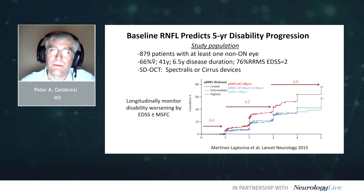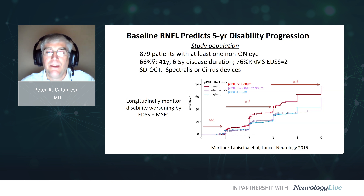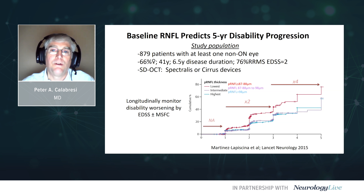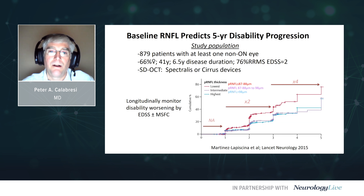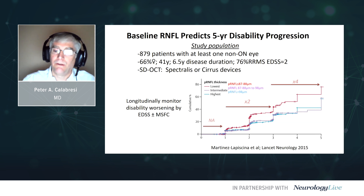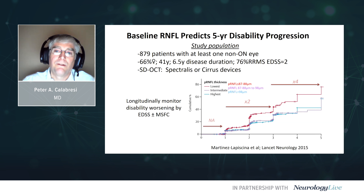We and others around the world have been able to show thinning of retinal layers. In this international MS Visual Consortium collaborative paper with 879 patients who had an OCT evaluation — in non-optic neuritis eyes — we showed that patients in the lowest tertile of nerve fiber layer thickness had the worst prognosis. At year three, they were twice as likely to have disability progression. By five years, they were four times as likely to have worsening on the EDSS scale. An OCT at baseline in the lowest tertile — less than 87–88 microns — predicted four times higher risk of disability progression.